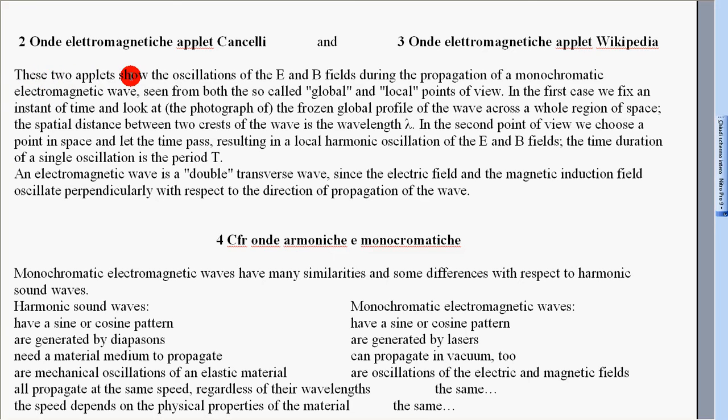These two applets show the oscillations of the E and B fields during the propagation of a monochromatic electromagnetic wave, seen from both the so-called global and local points of view. In the first case we fix an instant of time and look at the photograph of the frozen global profile of the wave across a whole region of space.